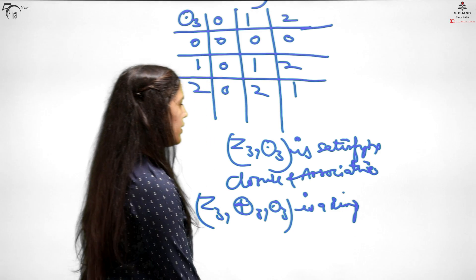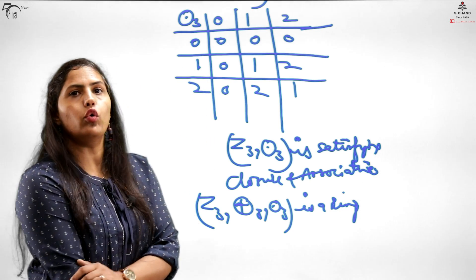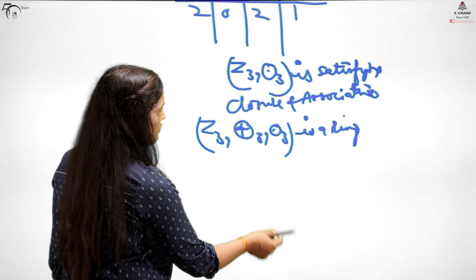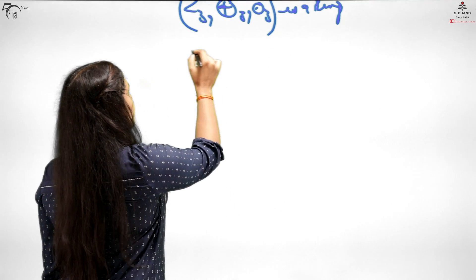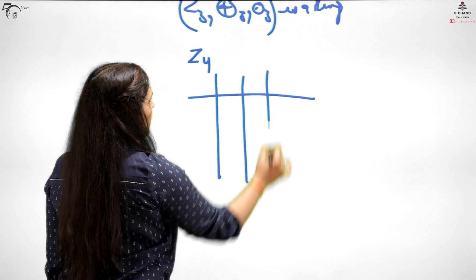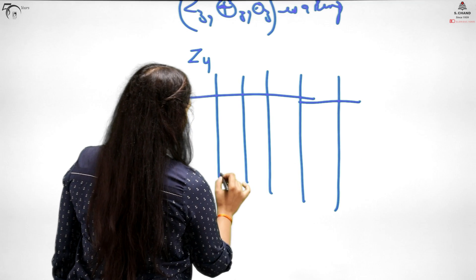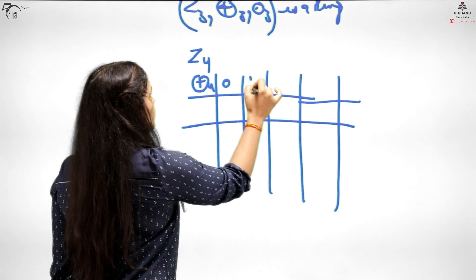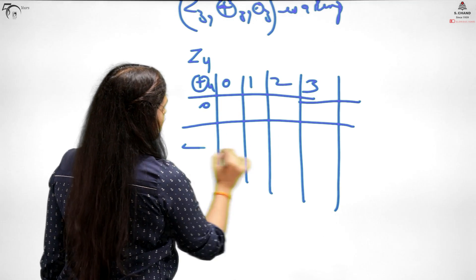So Z2 is a ring, Z3 is also a ring. It's not that Z4 will also be a ring - it is a ring. I'll just make the table for Z4 quickly. Then I'll come to the fact of why this is true. Z4 has elements 0, 1, 2, 3.